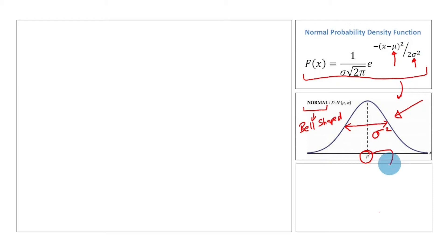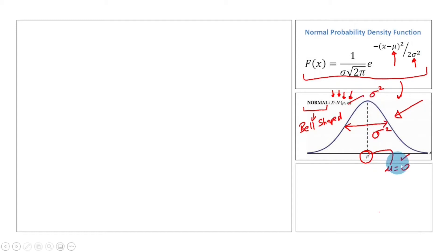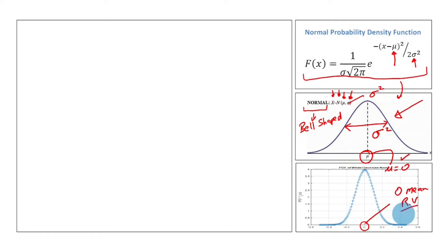For random noise, the mean value is often set to 0. So X follows a normal distribution N(mu, sigma squared) where mu equals 0 in the present case and the variance is sigma squared. Since mu equals 0, this is a zero-mean probability density function. If we want to find the probability of having a value between, say, minus 2 and minus 0.1, we find the area in that region. Note that integrating the PDF curve from minus infinity to infinity yields a value of 1.